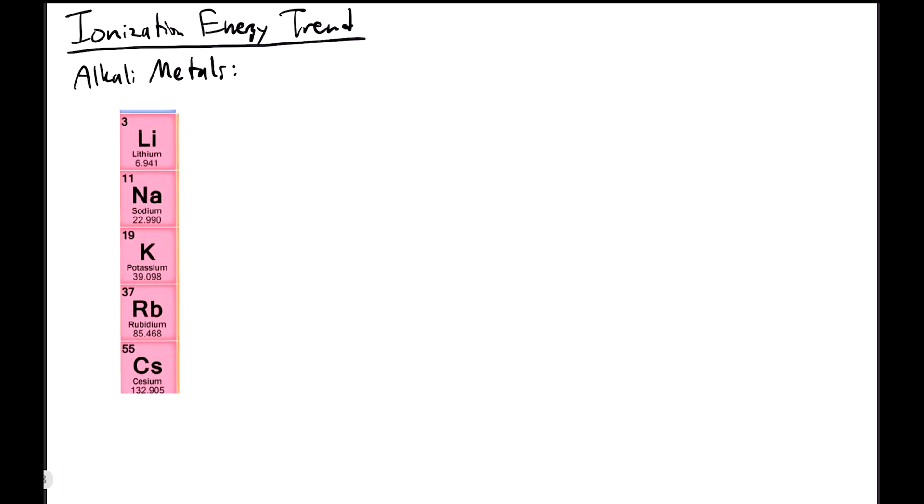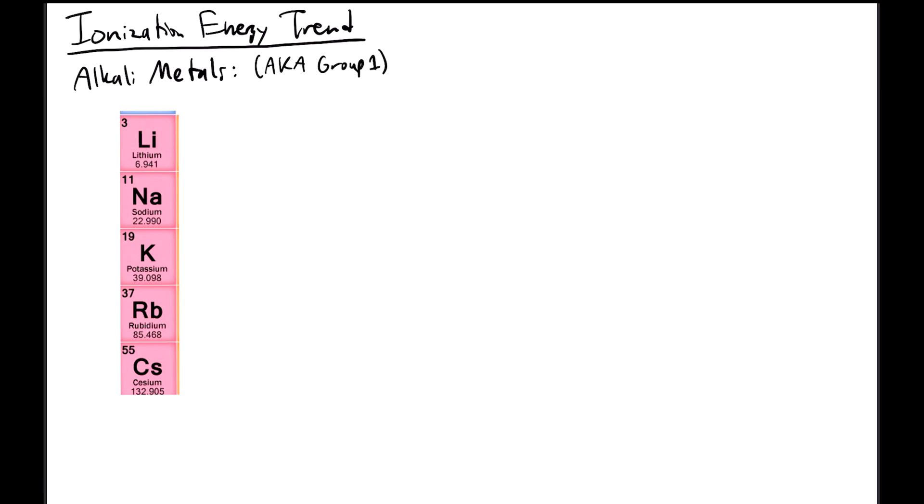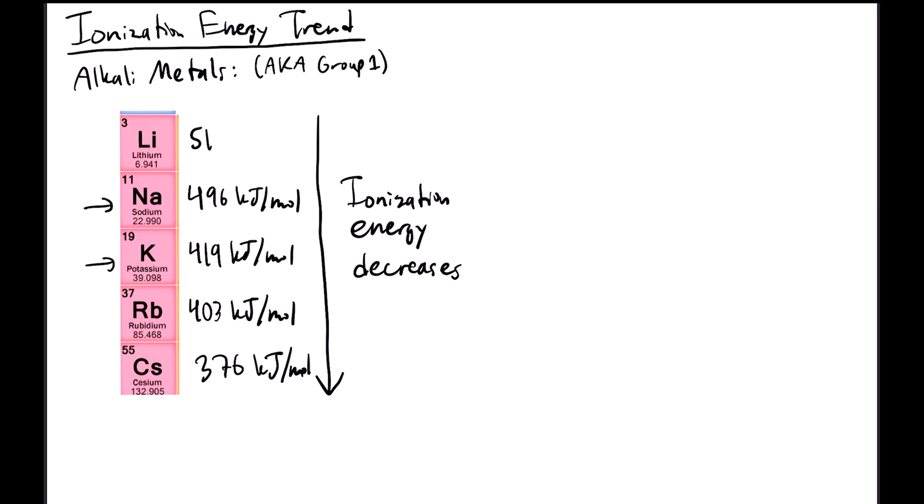That's lithium, sodium, potassium, rubidium, and cesium. This column is also called the first group of the periodic table. Notice that potassium is one row lower than sodium. In other words, going down a column, ionization energy decreases. The ionization energy of cesium is less than rubidium, which is less than potassium, which is less than sodium, which is less than lithium.